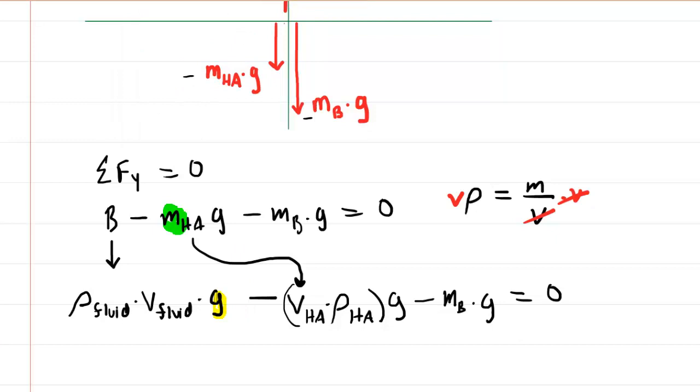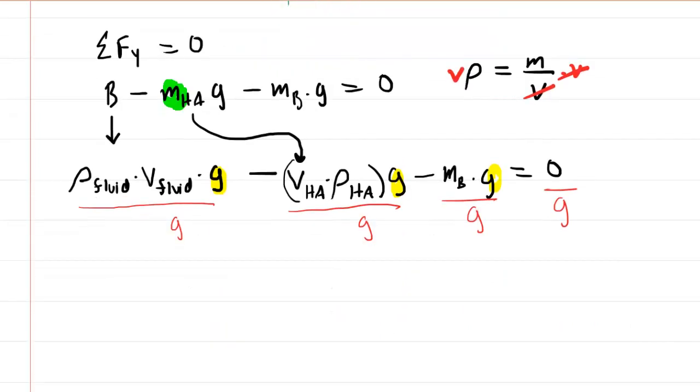Now if we look carefully, we can see that g appears in each term of our equation. So what we can do to simplify it is to divide all terms by g. Technically you have to divide the right hand side by g as well. So all the g's are going to cancel, and this will leave us with the following equation.